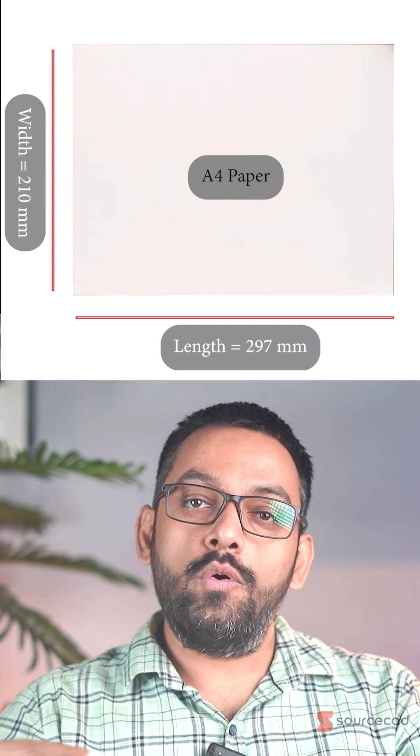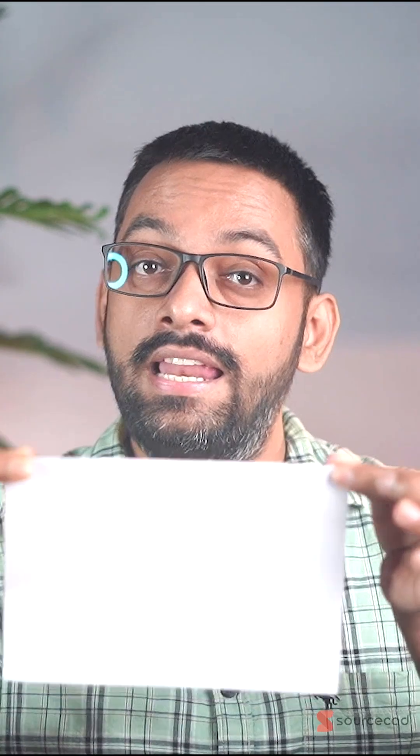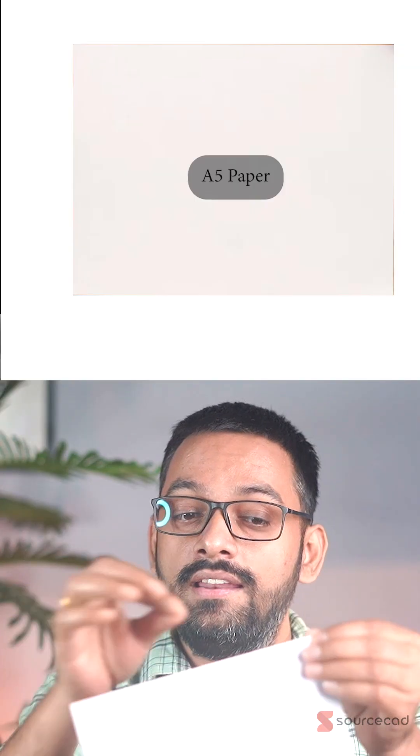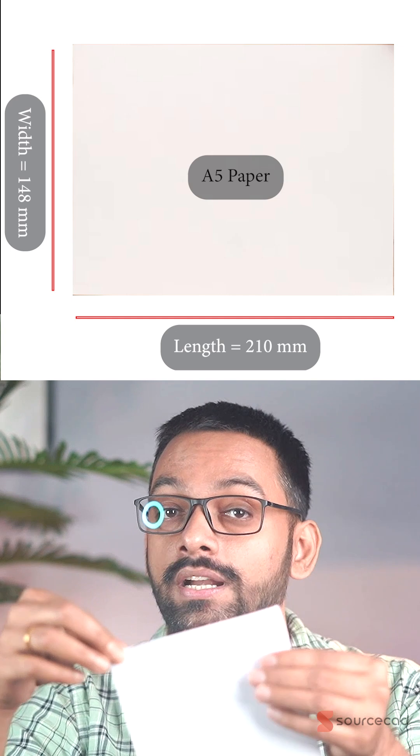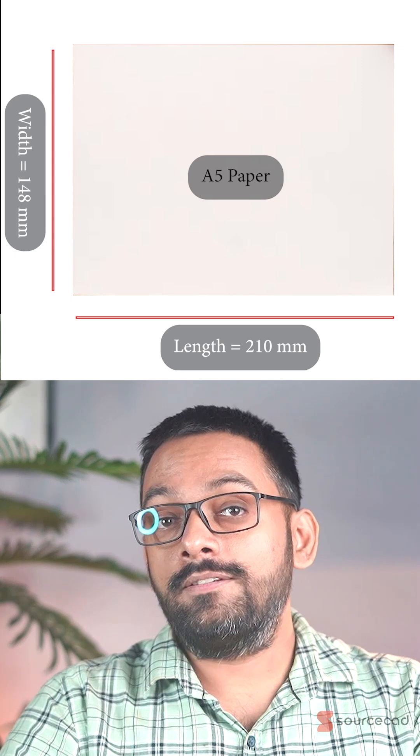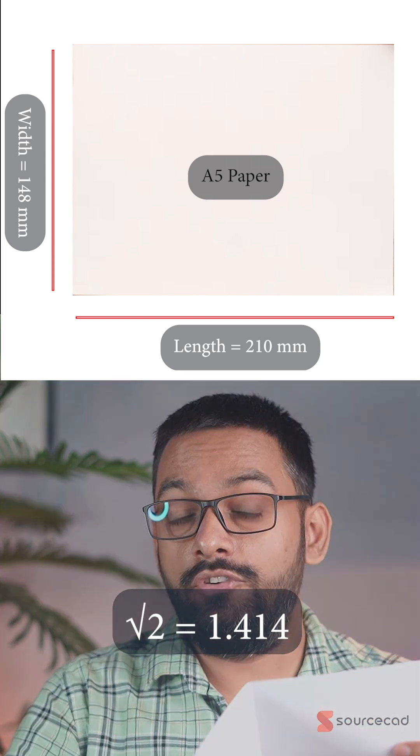If you fold this paper in half along the longer side, what you get is an A5 paper size. Once again divide its length by its width and you get square root of 2.